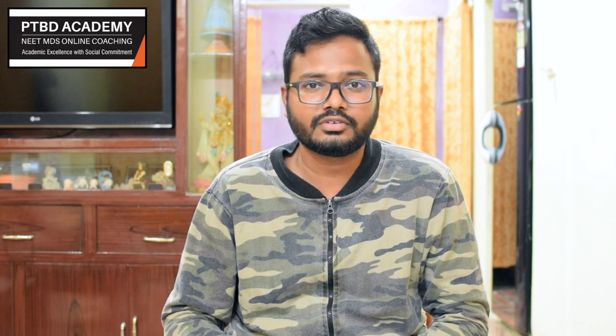Radiographically, especially in jaws, hyperparathyroidism produces a ground glass appearance of bone. The lamina dura around the teeth may be partially lost. These radiological features are of special interest to dentists in recognizing this condition.